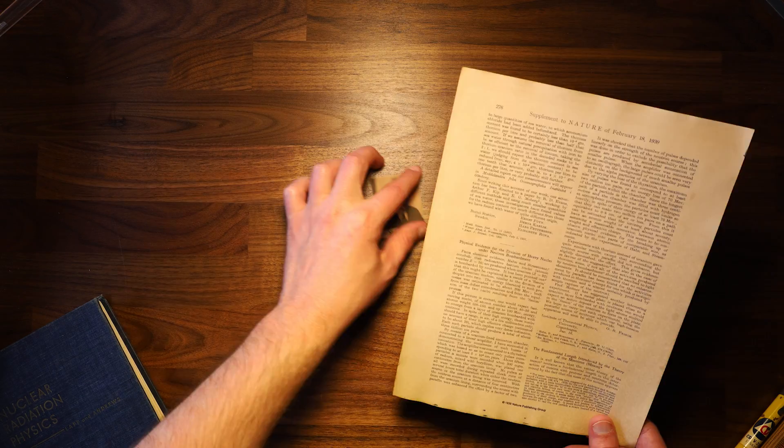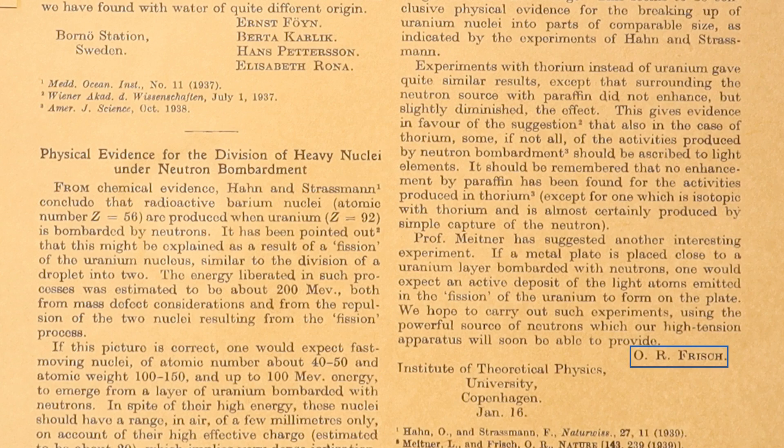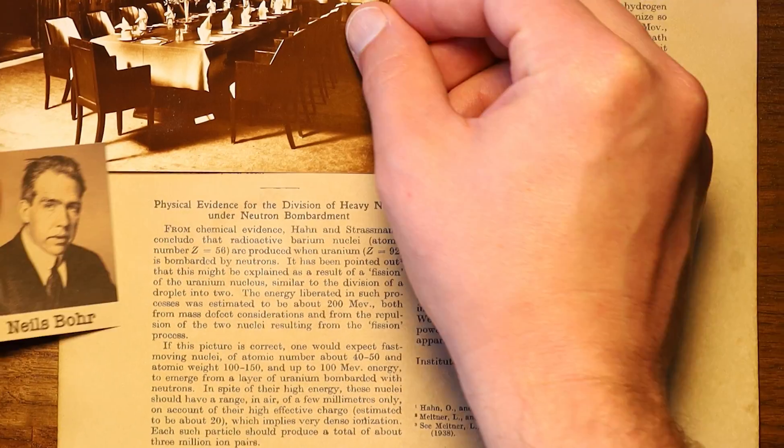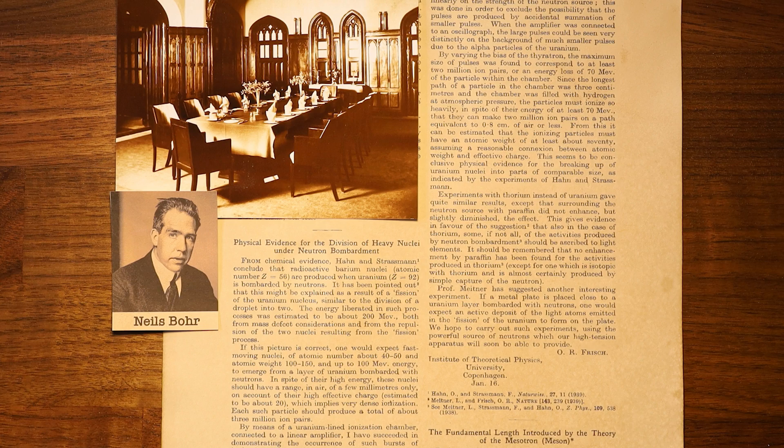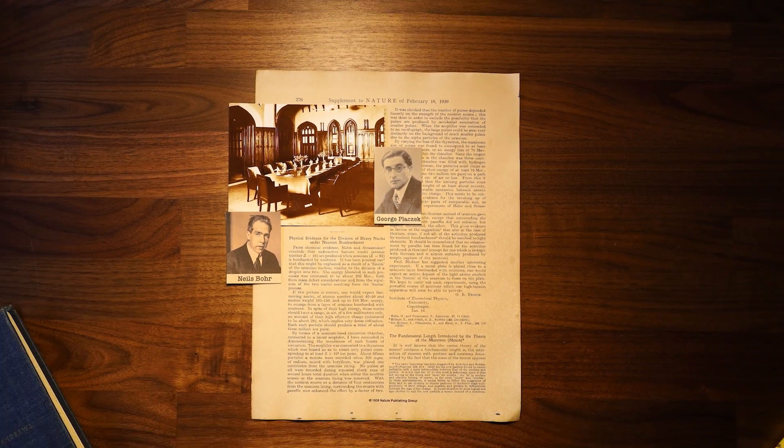Niels Bohr was frustrated. Just a month earlier, his student Otto Frisch had been part of a dramatic discovery: the splitting of the uranium nucleus. Now, as Bohr ate dinner at the faculty club at Princeton, another physicist, George Plachek, called into question Bohr's understanding of these new results.